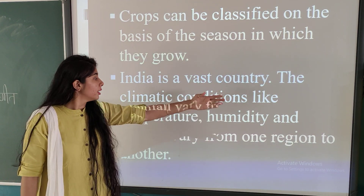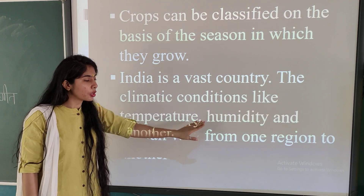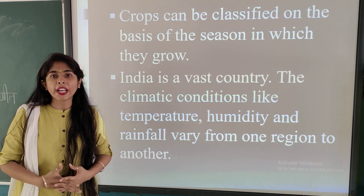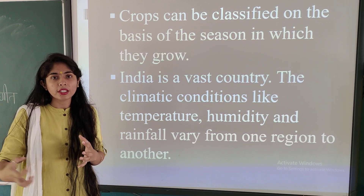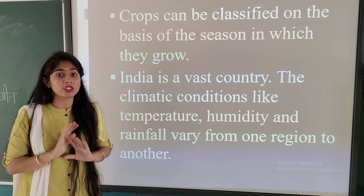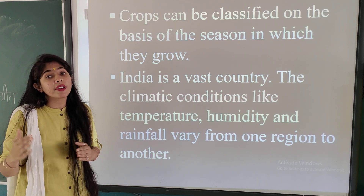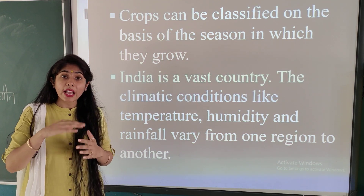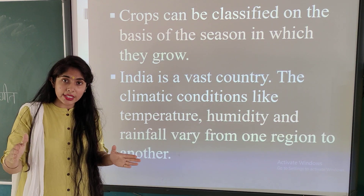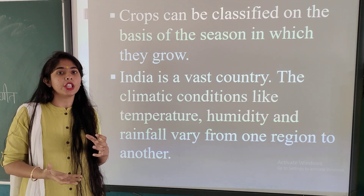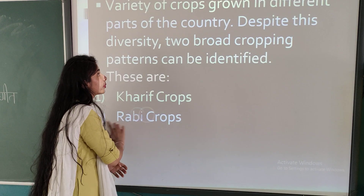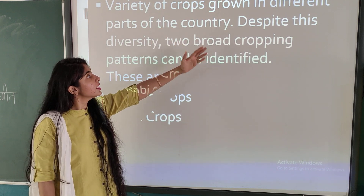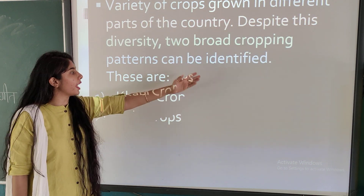India is a vast country. The climate conditions like temperature, humidity, and rainfall vary from one region to another. There are a variety of climatic changes across India — even within Gujarat alone, as the distance increases, climatic variations are observed more. Due to this diversity, a variety of crops are grown in different parts of the country, and two broad cropping patterns can be identified.